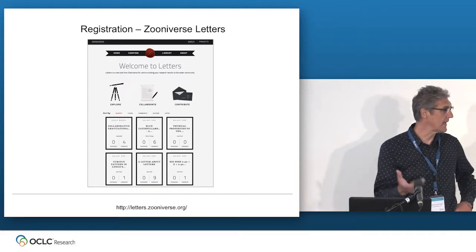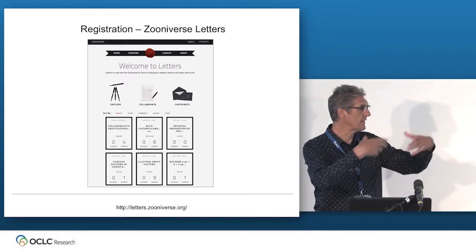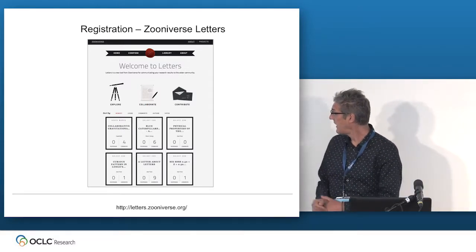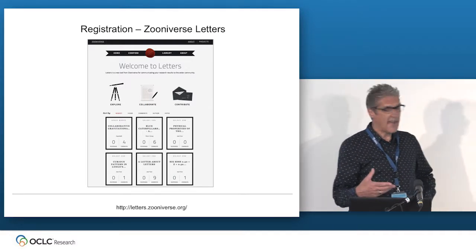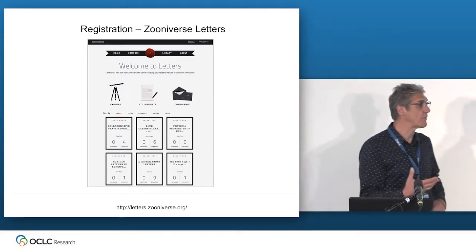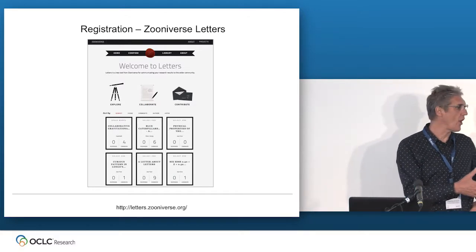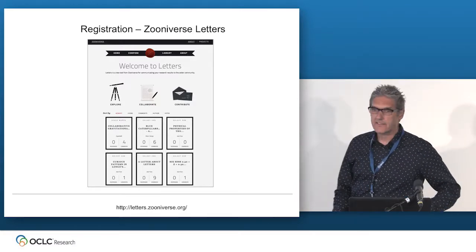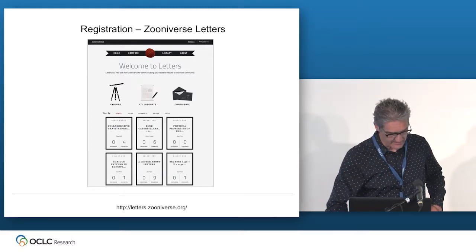This kind of activity is not even restricted to real scientists anymore — there's an awful lot of citizen science. You've probably heard of Zooniverse, where people can contribute, for example, identifying stellar objects. And this is new: we now have Zooniverse Letters, where citizen science can publish papers. So suddenly there's a scholarly record that doesn't belong only to scientists anymore; the public is also doing this.